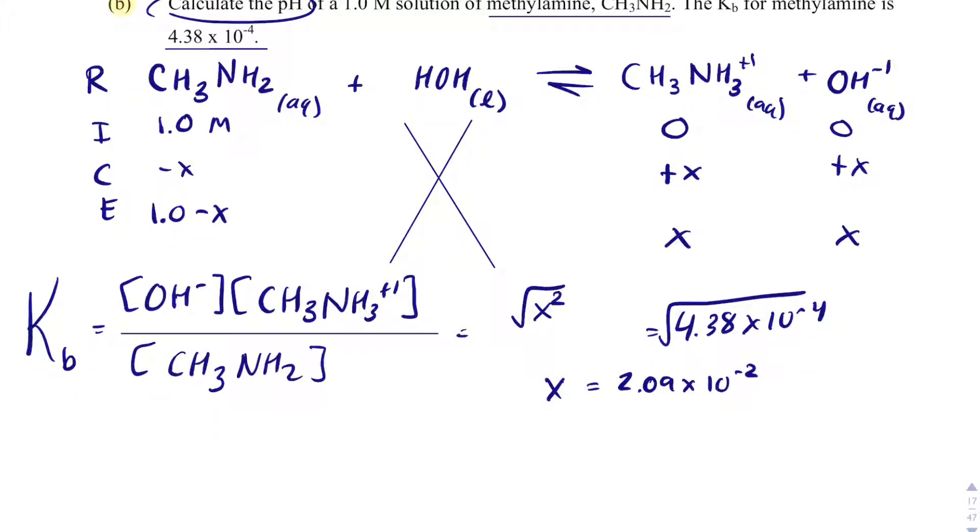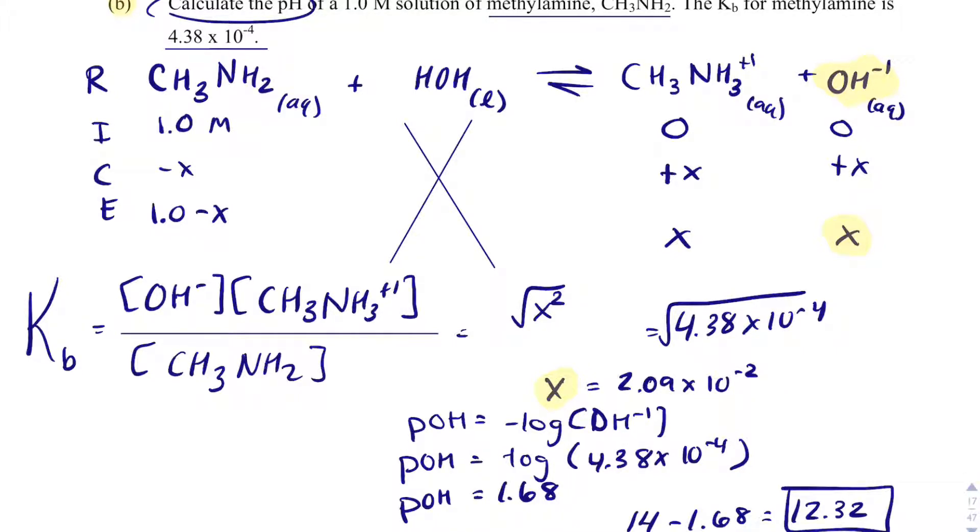I need to get the pH. So I'll take the negative log of that. The only thing I'm going to make sure of is that X is really hydroxide. So when I take the negative log of that, that is really the POH. So POH equals negative log 4.38 times 10 to the minus 4. And my POH, when I do that, is 1.68. I will take 14 minus 1.68, and I will end up getting 12.32, which is the pH of the solution. Again, not surprising. We do have a base, so we should expect the solution to be slightly basic.